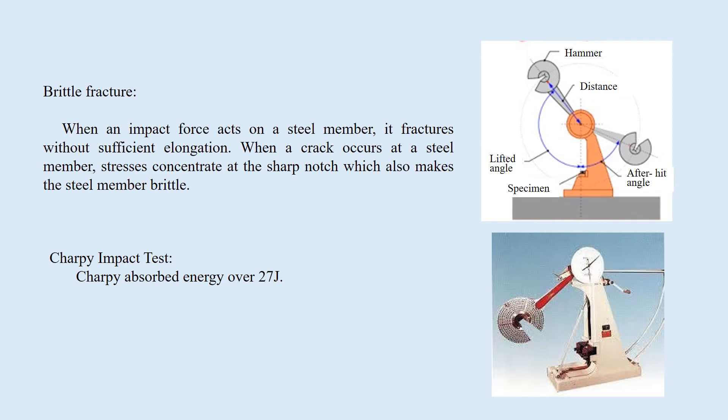Brittle fracture: when an impact force acts on a steel member, it fractures without sufficient elongation. This is called brittle fracture, which is a crucial problem. When a crack occurs at a steel member, stresses concentrate at the sharp notch, which also makes the steel member brittle. To judge the safety of a notched steel member, the Charpy impact test is conducted.